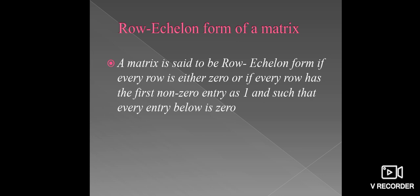Row echelon form of a matrix. A matrix is said to be in row echelon form if every row is either 0, or if every row has the first non-zero entry as 1, and such that every entry below is 0.